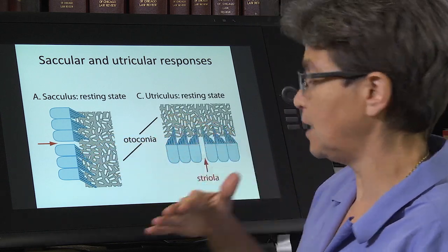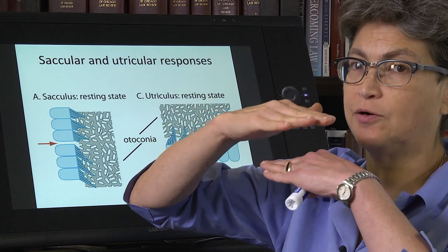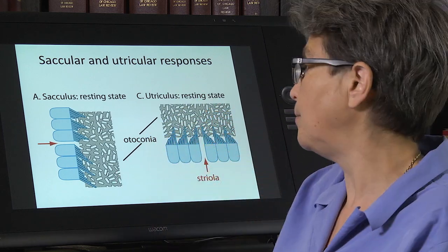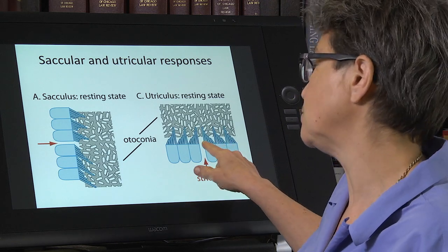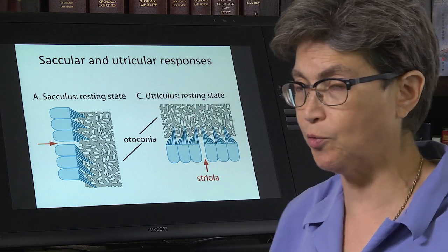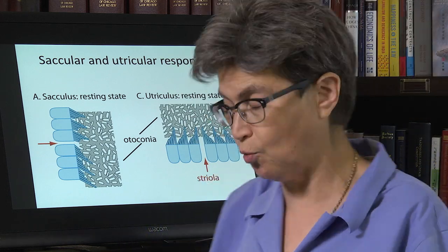The utriculus, it's sitting on top of the hair cells. So it's in the horizontal plane. And the hair cells are oriented towards the striola. It doesn't actually matter. I would not worry about remembering whether it's oriented towards or away from the striola.